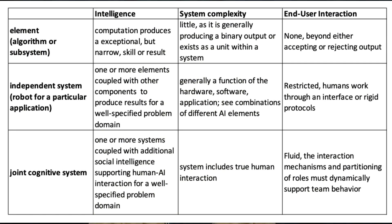So that gives an overview of the three categories of AI based on its intelligence, system complexity, and end-user interaction — and also what that means for intelligent robots.